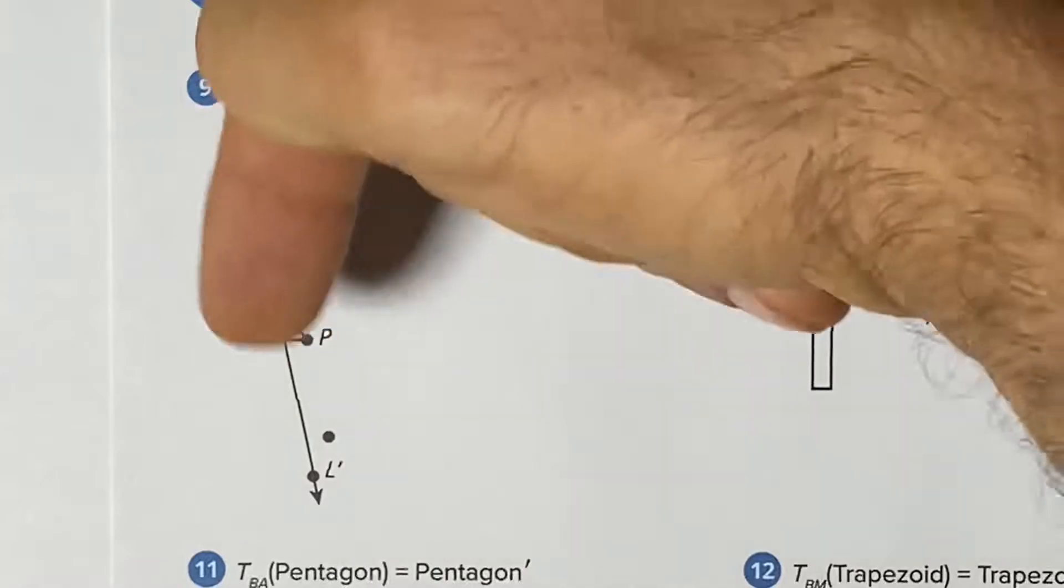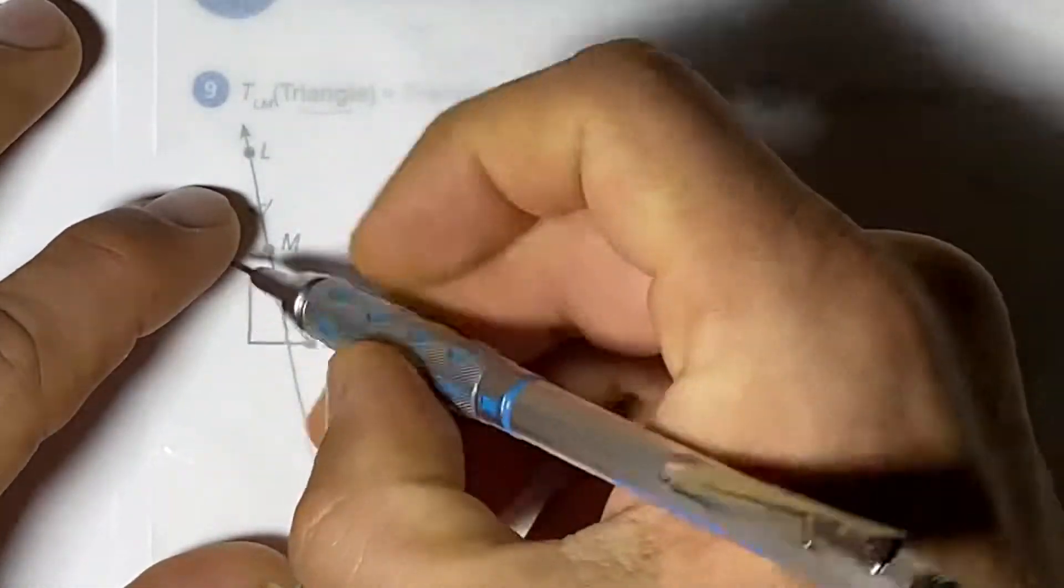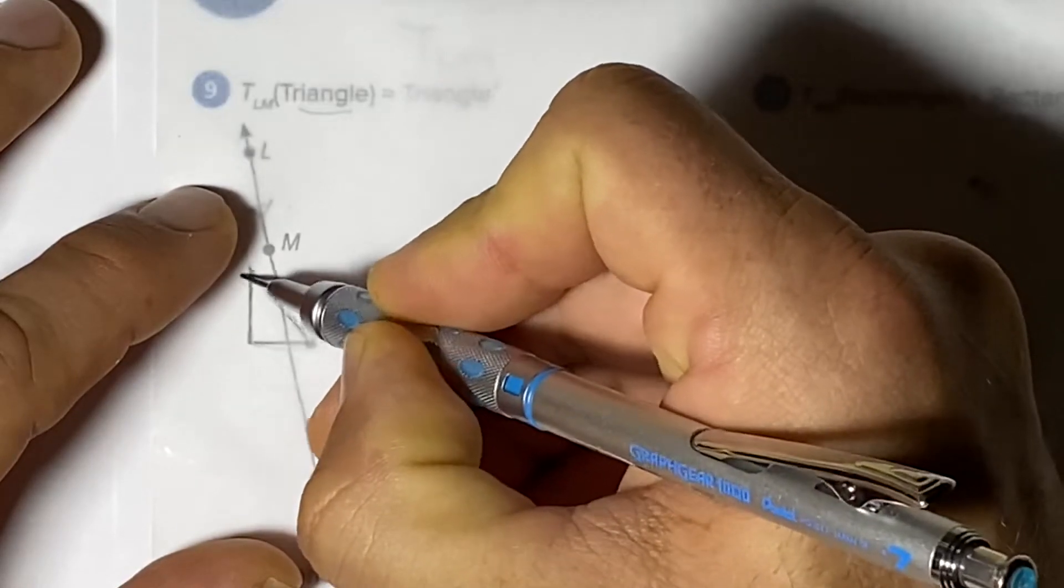So we're going to be sliding downward and what we're going to do is take the tracing paper and trace the triangle that we want to translate. So we trace the shape.